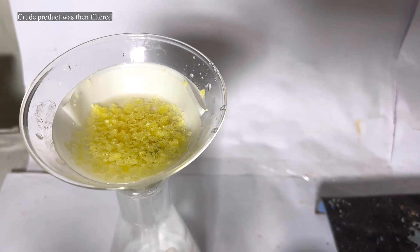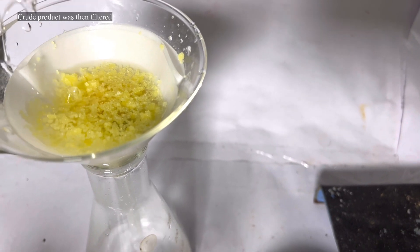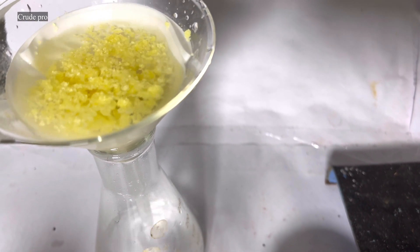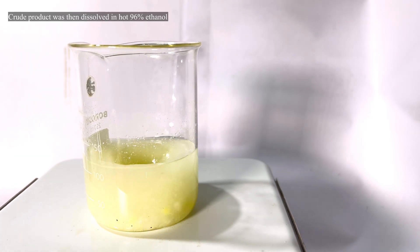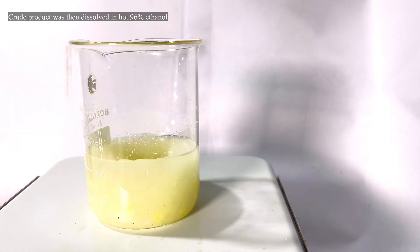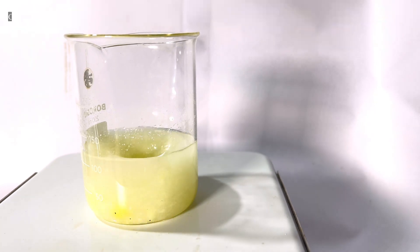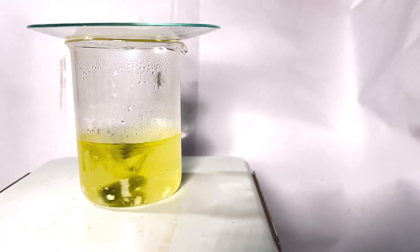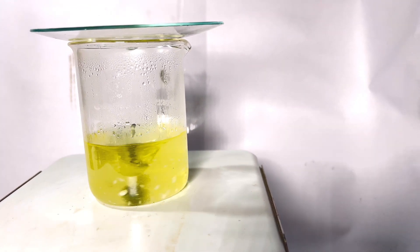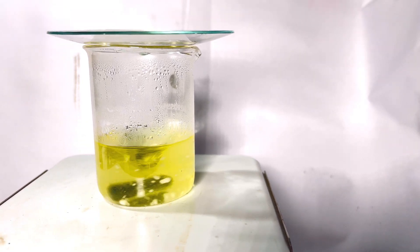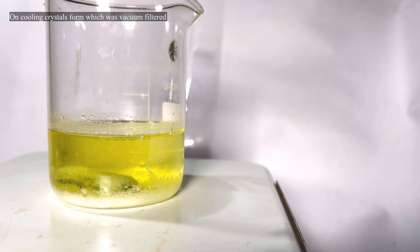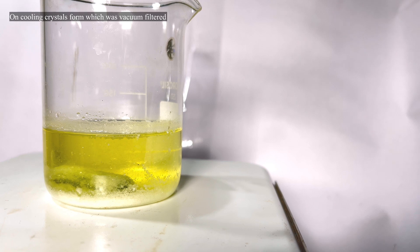Finally, the crude product was filtered. It had a distinct yellow color. It was then recrystallized from hot 96% ethyl alcohol. On cooling, white crystalline precipitate of triphenyl methanol was obtained.